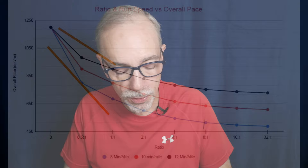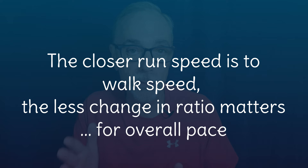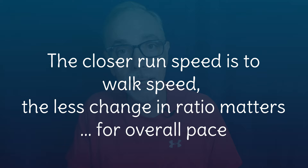The second observation is that if you look at those curves, the slower running speed curve — 12 minutes per mile — is not quite as deep as the 8-minute-per-mile curve. The greater the difference between your running speed and your walking speed, the more changing your ratio will help you. Conversely, the closer your running speed is to your walking speed, the less changing your ratio will matter. The faster you run, the more ratio changes benefit your overall pace.